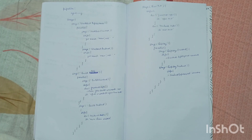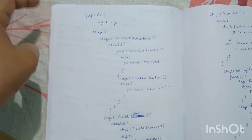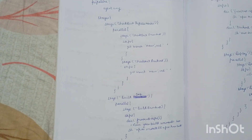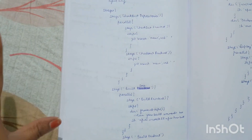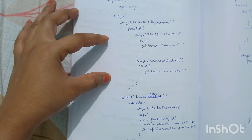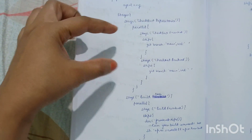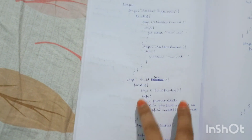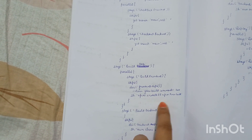Now I'll show you how to write the pipeline — here's a sample you can refer to. We use a parallel directive so that both the frontend and backend steps can run in parallel, reducing execution time. If you don't want parallel execution, you can remove that parallel step and run them one by one. In parallel mode, it checks out code from the respective branches for frontend and backend, then builds both: for frontend we use npm install since it's Node.js, and for backend we use Maven since it's Java.